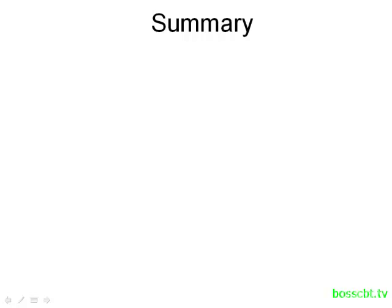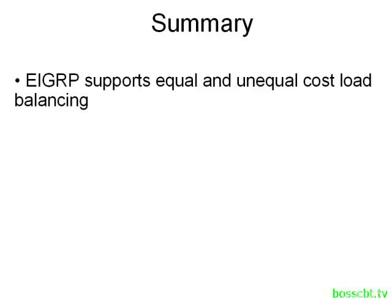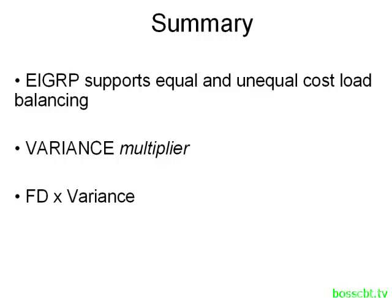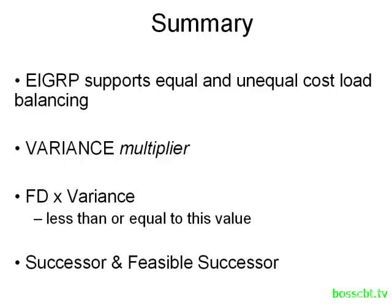Let's summarize what we covered. EIGRP can support not only equal cost load balancing but also unequal cost load balancing. We can enable this using the variance command — by default that multiplier value is 1. The router applies the formula: feasible distance times the variance multiplier to get a new sum, and all feasible successors must be equal to or less than that sum to be eligible for load balancing. Keep in mind that only successor routes and feasible successor routes are eligible in the first place — routes that don't meet the feasibility condition are not candidates. That is how we configure EIGRP load balancing. Thanks for watching.